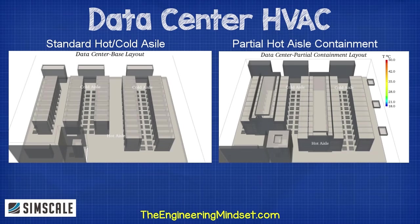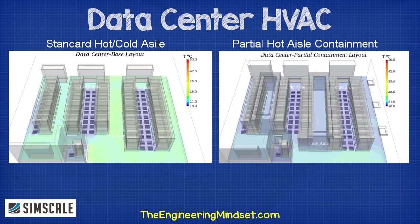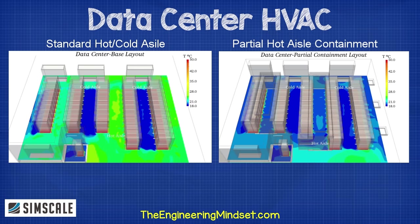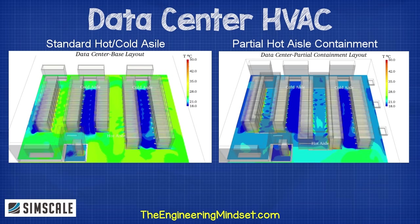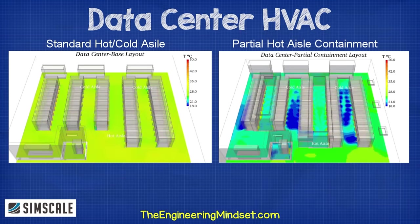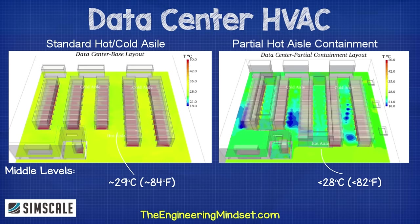If we then run a simulation for thermal analysis of the designs, we can compare the two designs and show the resulting temperature distribution at different levels. The simulation starts at floor level and moves up to the top of the racks. From the comparison, we can clearly observe that at the lower levels, the second design has a much cooler cold aisle as compared to the first design. As we move to the upper levels, the air temperatures start to mix, but the second design still maintains much cooler levels, well below 28 degrees Celsius or 82 degrees Fahrenheit.